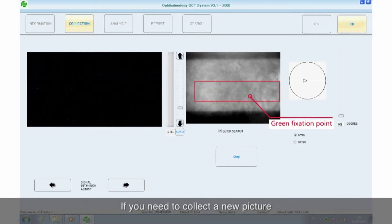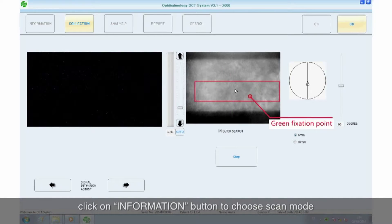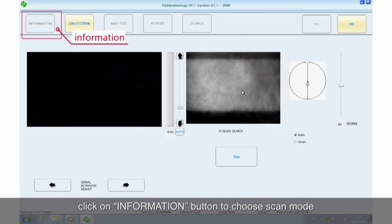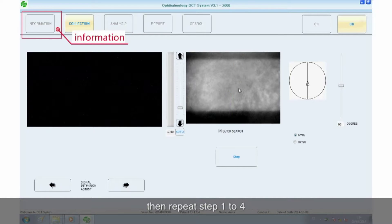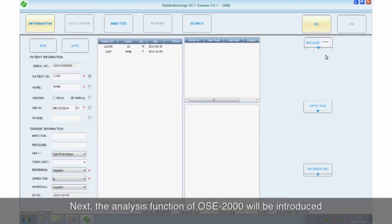If you need to collect a new picture, click on Information button to choose scan mode, then repeat steps 1 to 4. Next, the analysis function of OSE 2000 will be introduced.